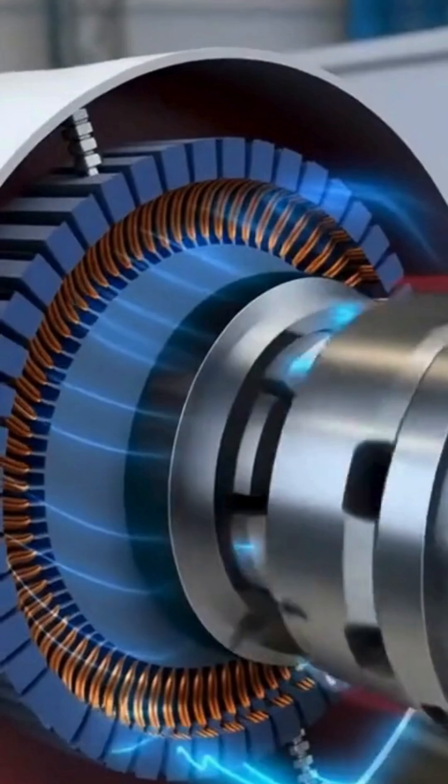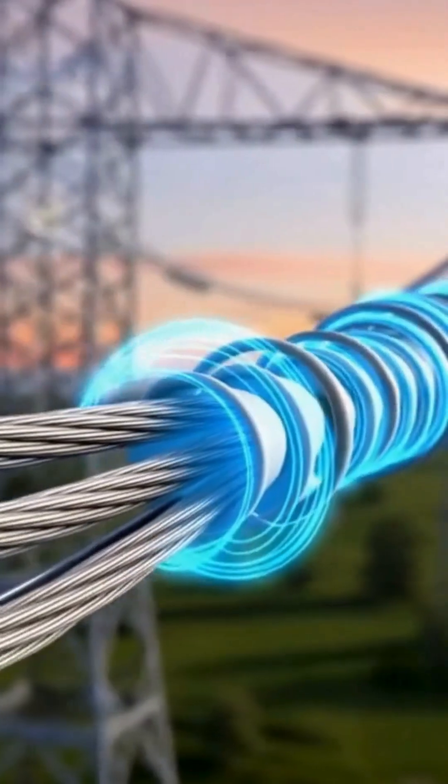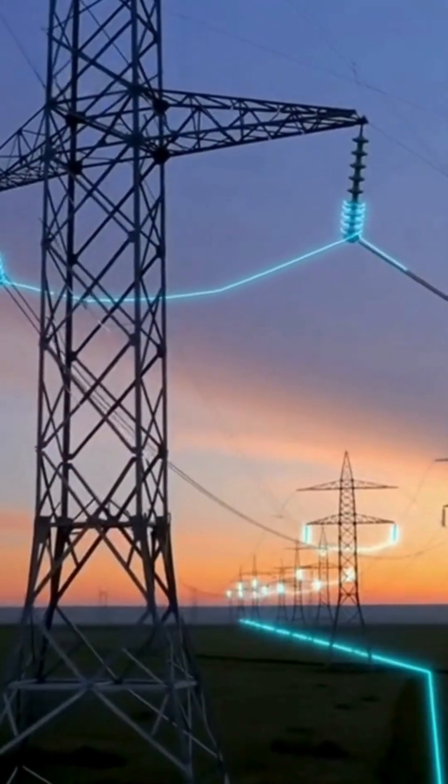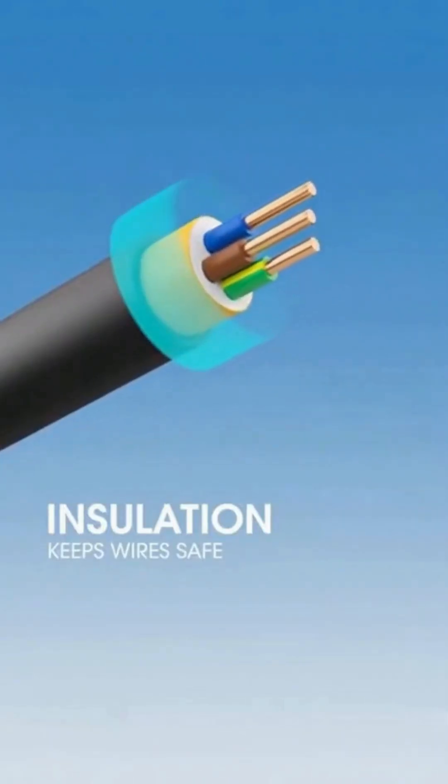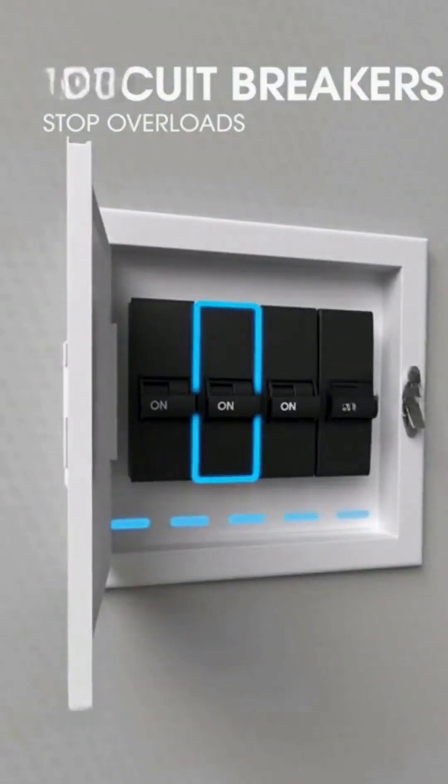Inside the plant, high-pressure steam spins massive steel turbines. The rotating shaft turns a generator where coils of copper cut through invisible magnetic fields. Thick insulation keeps the power where it belongs, inside the wires.